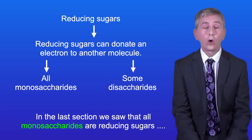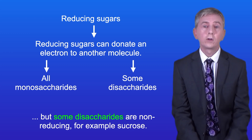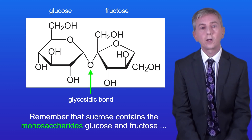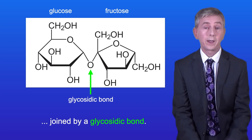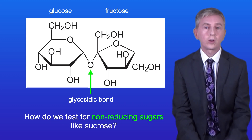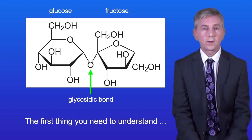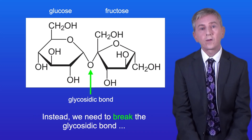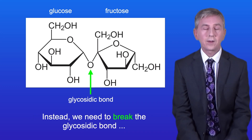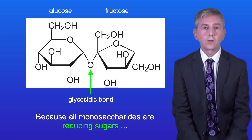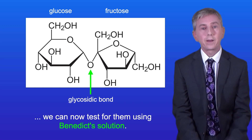All monosaccharides are reducing sugars but some disaccharides are non-reducing, for example sucrose. Remember that sucrose contains the monosaccharides glucose and fructose joined by a glycosidic bond. We cannot test for non-reducing sugars directly. Instead we need to break the glycosidic bond releasing the monosaccharides, and because all monosaccharides are reducing sugars we can then test for them using Benedict's solution.